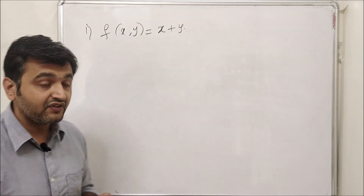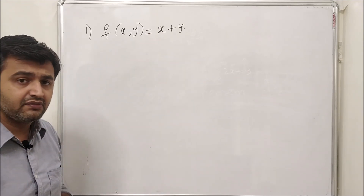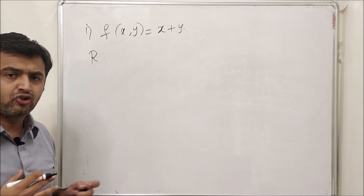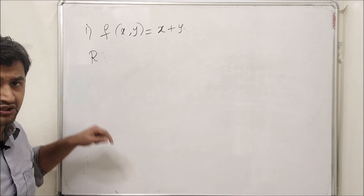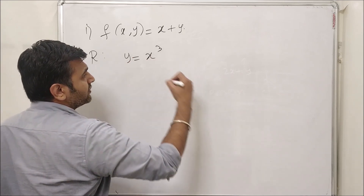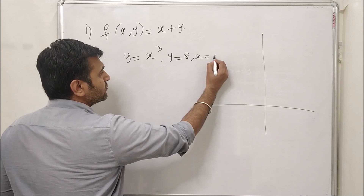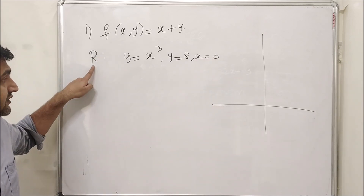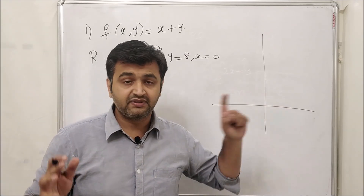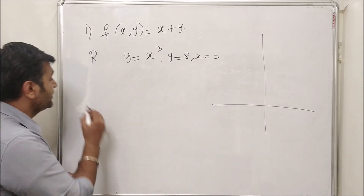Let's take the first example: f(x,y) = x + y. I'm taking a very simple function because my main aim is to show you how to find the limits. Let R be a region bounded by y = x³, y = 8, and x = 0. These are the three curves bounding the region. Whenever a region is given, my suggestion is to always draw it, because you need to find the limits.